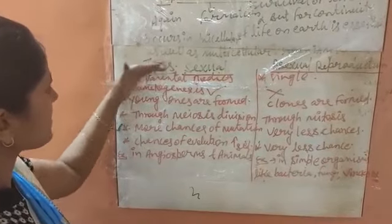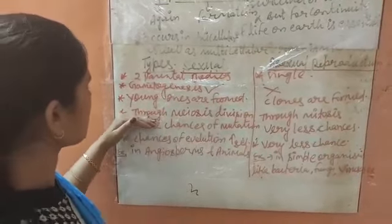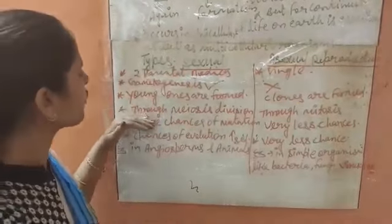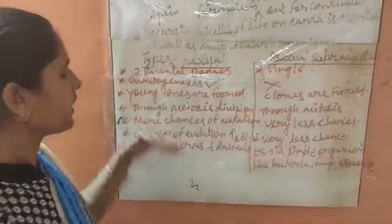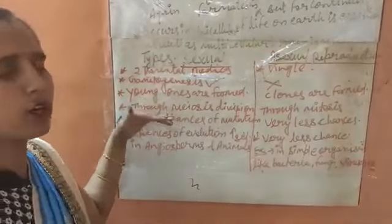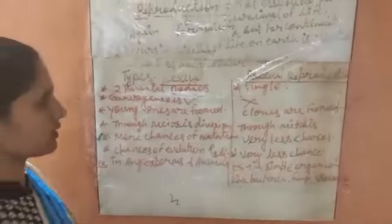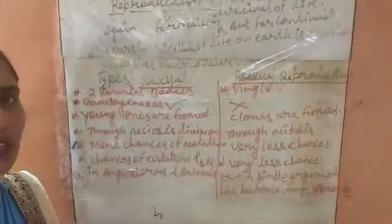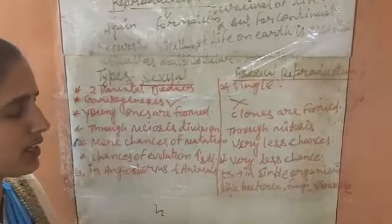A fourth difference between sexual and asexual reproduction is that sexual reproduction always occurs through meiotic cell division — the formation of young ones happens only through meiotic division. While in asexual reproduction, it always occurs through mitotic cell division, also called equational cell division.